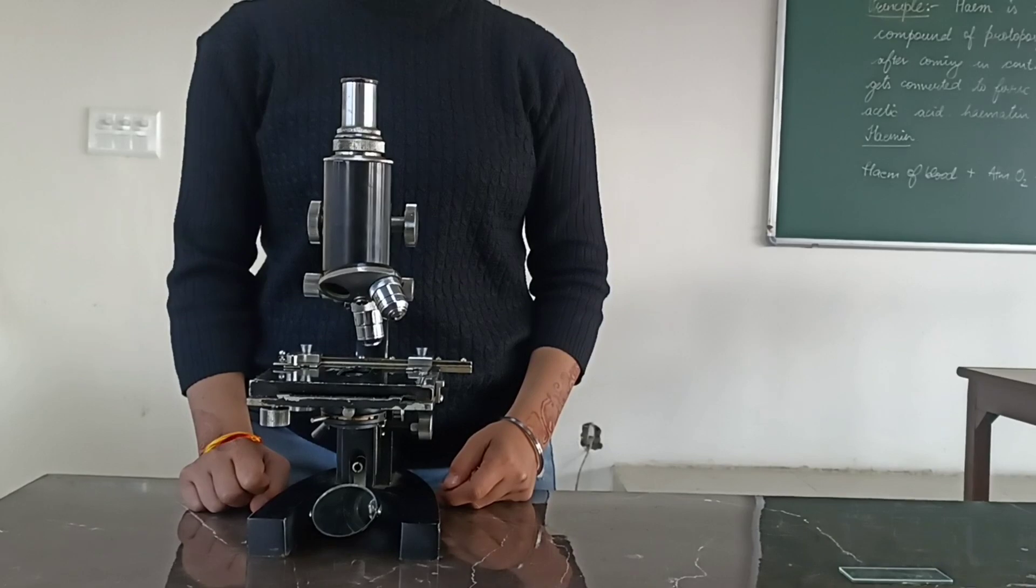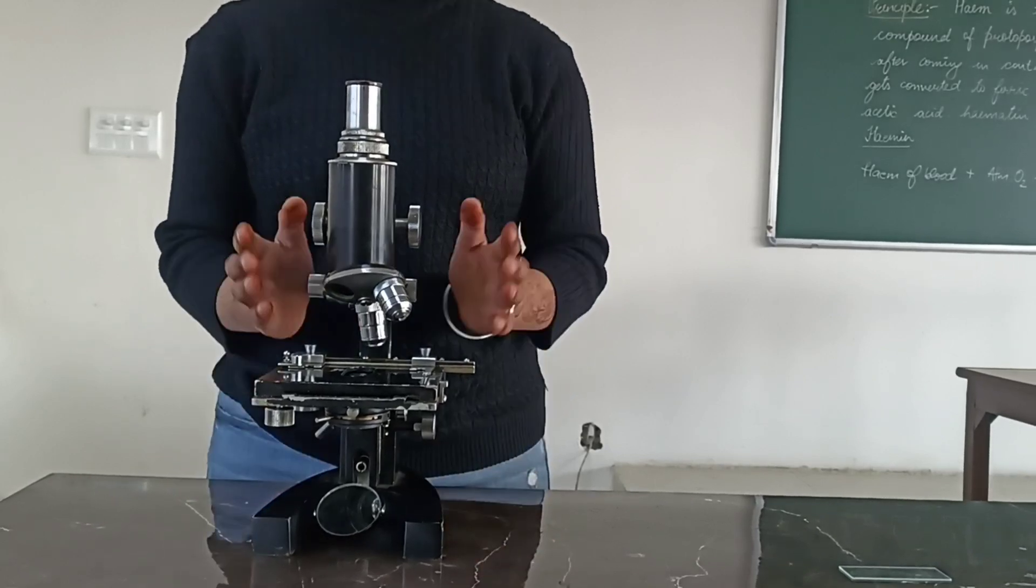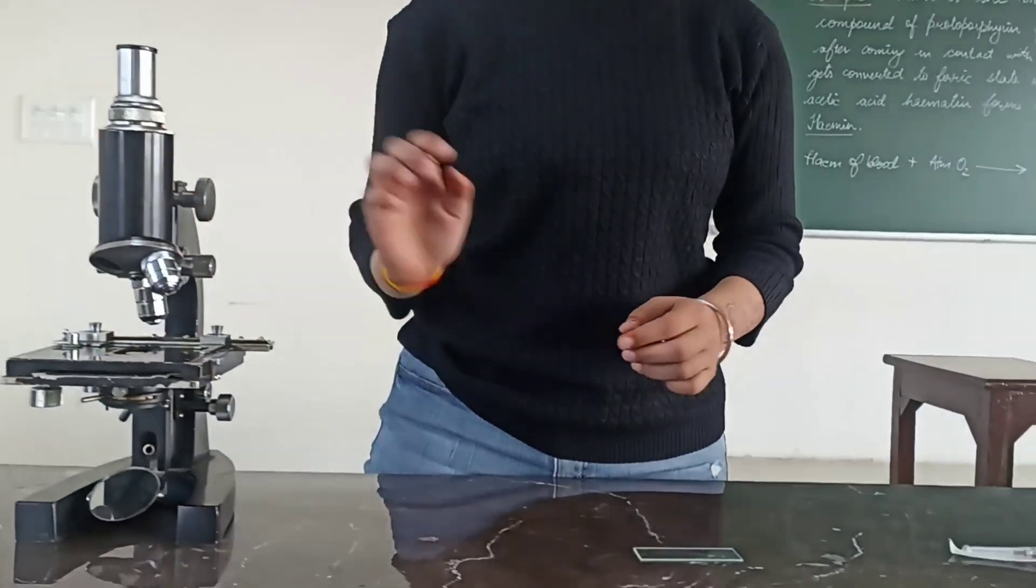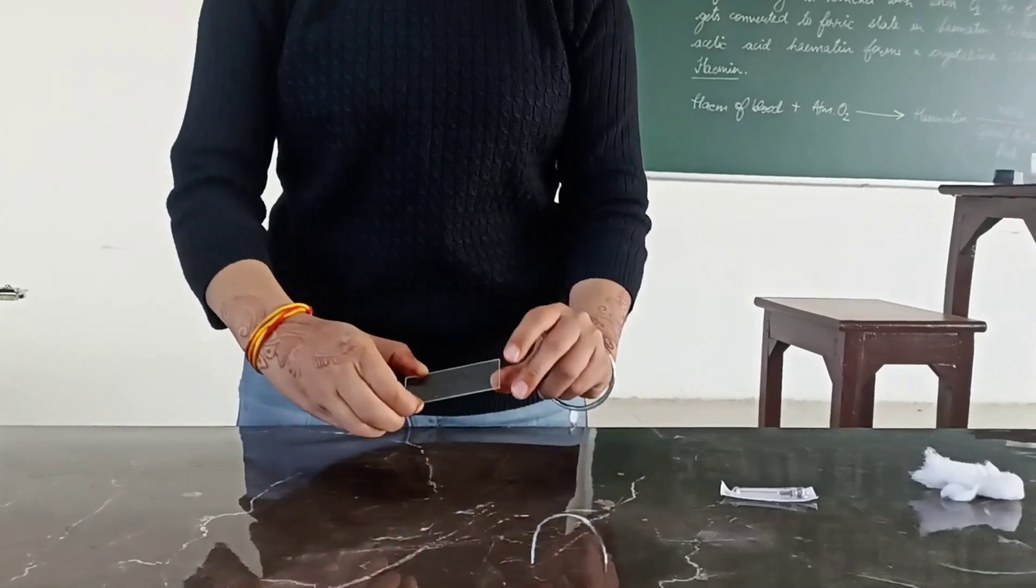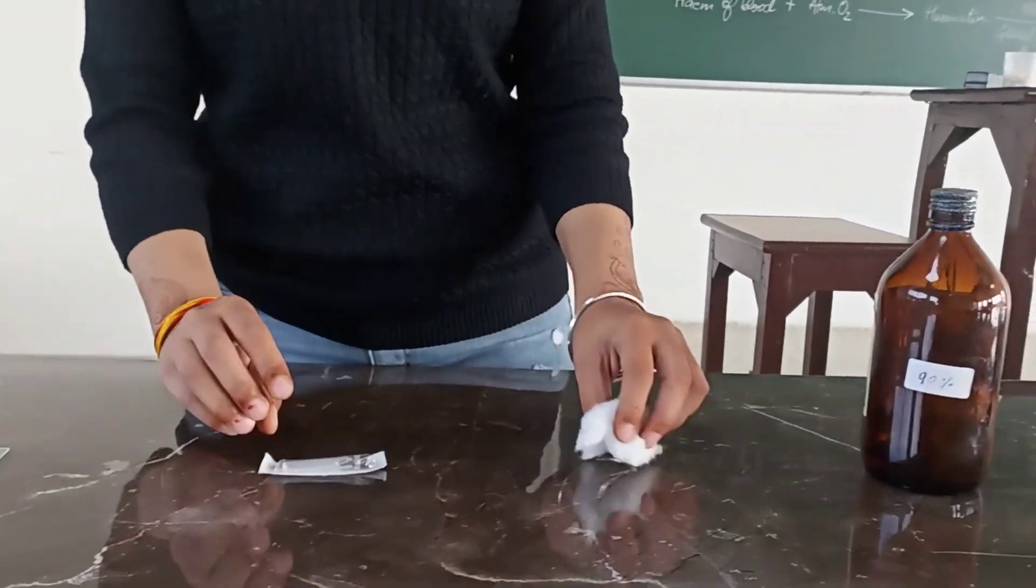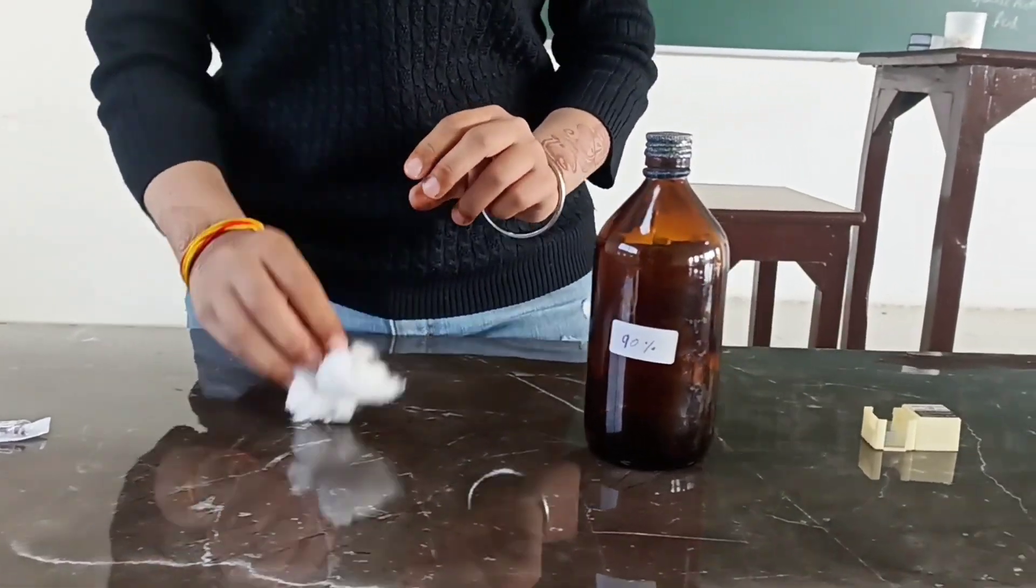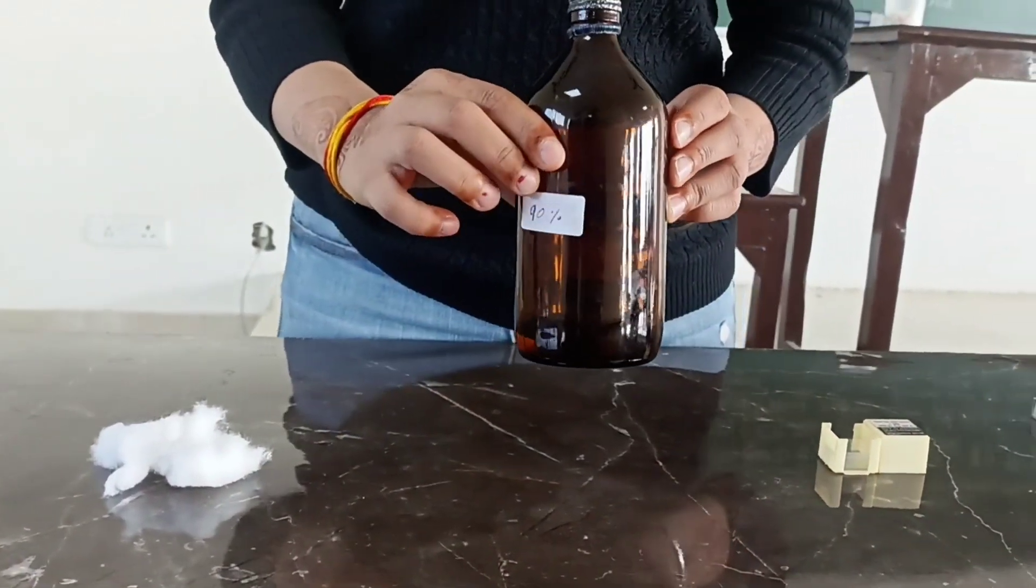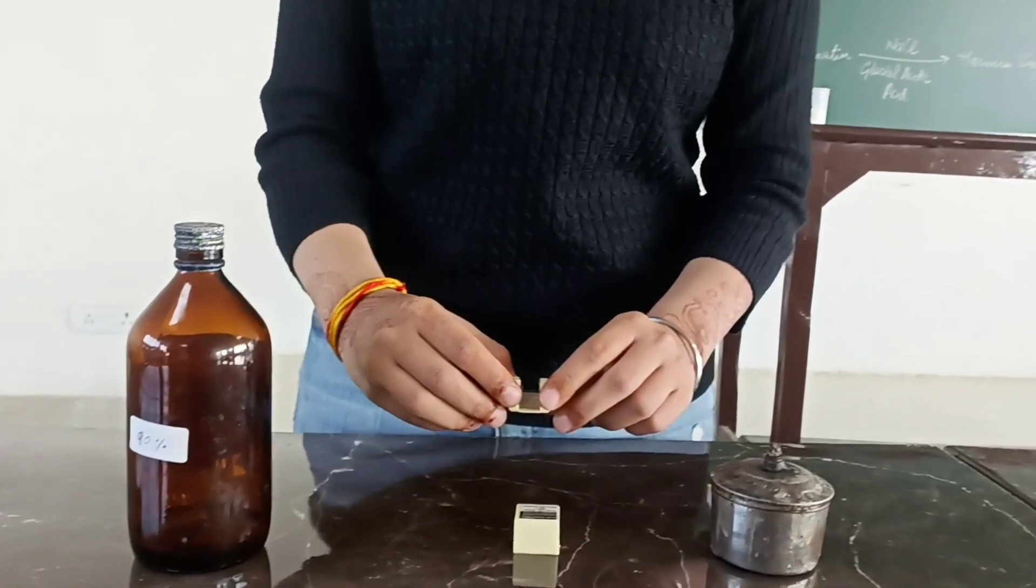Now let's see the materials required. We need a microscope, a slide, a pricking needle, cotton, 90% alcohol, cover slip, and a burner.